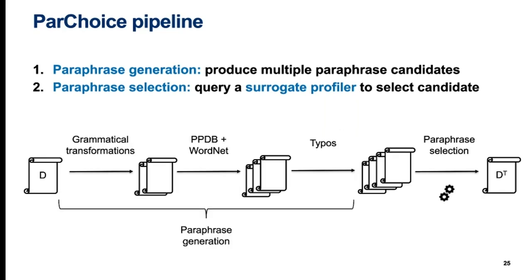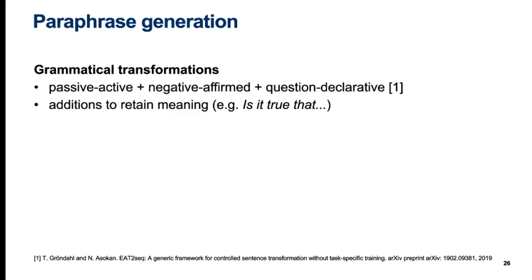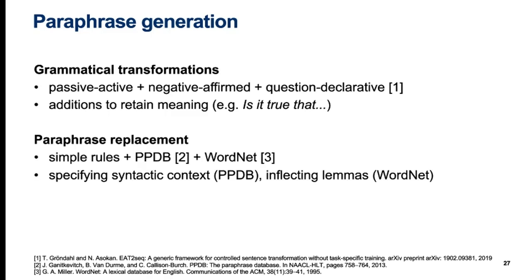The paraphrase generation task can be divided into three parts. For grammatical transformations we use passive-to-active, negative-to-affirmed, and question-to-declarative transformations with some additional material to retain the original meaning of the sentence. For example, a yes-no question like 'Did John see Mary?' could be paraphrased as 'Is it true that John saw Mary?' As external knowledge bases for paraphrase replacements we use PPDB and WordNet, and we also use a small set of simple rules dealing with things like modal auxiliaries and punctuation.